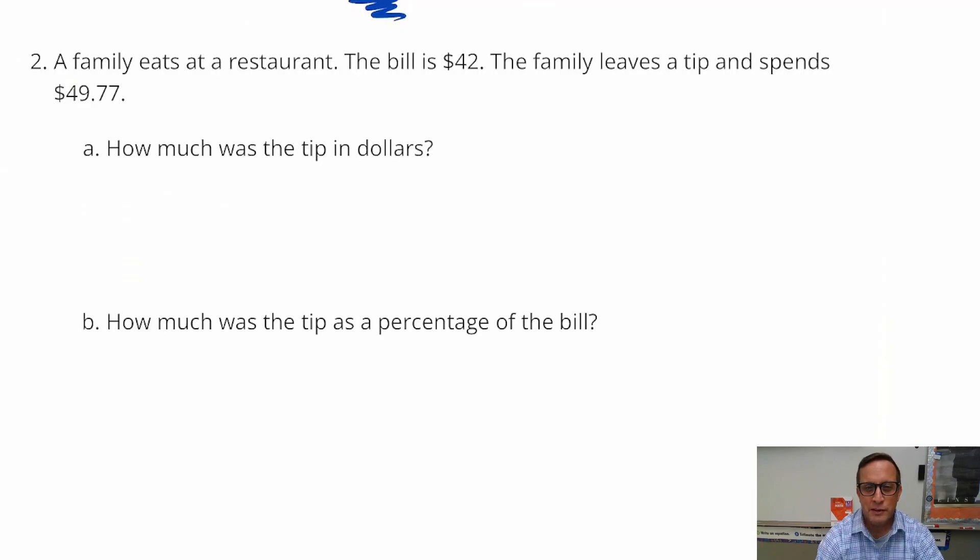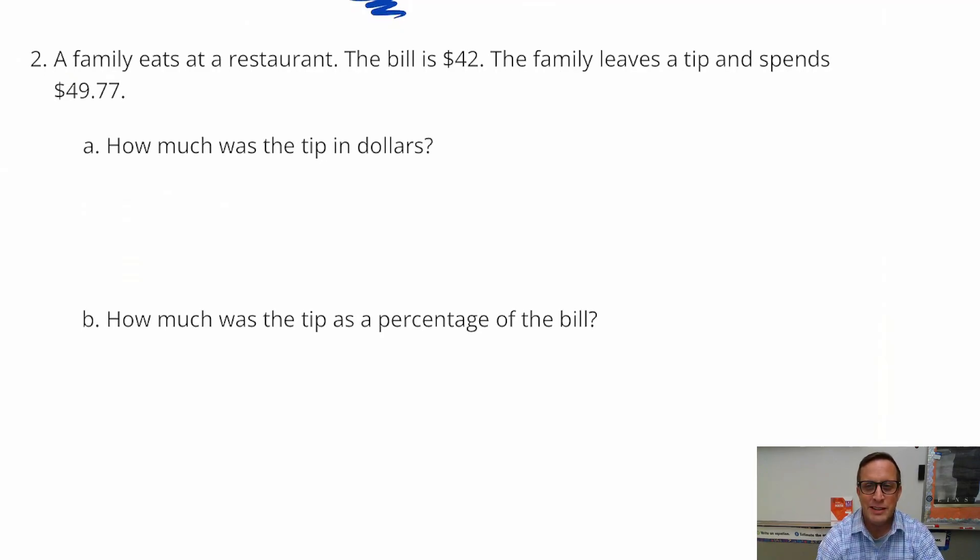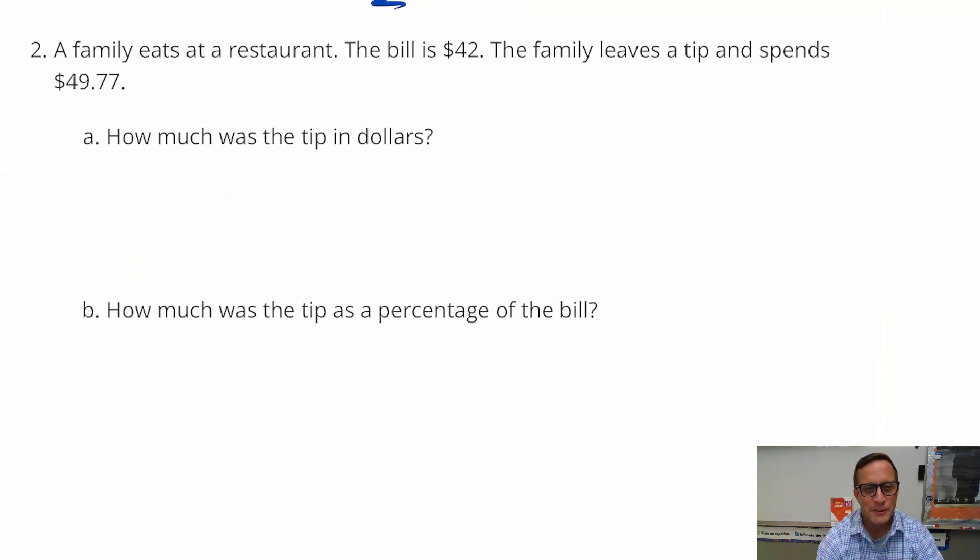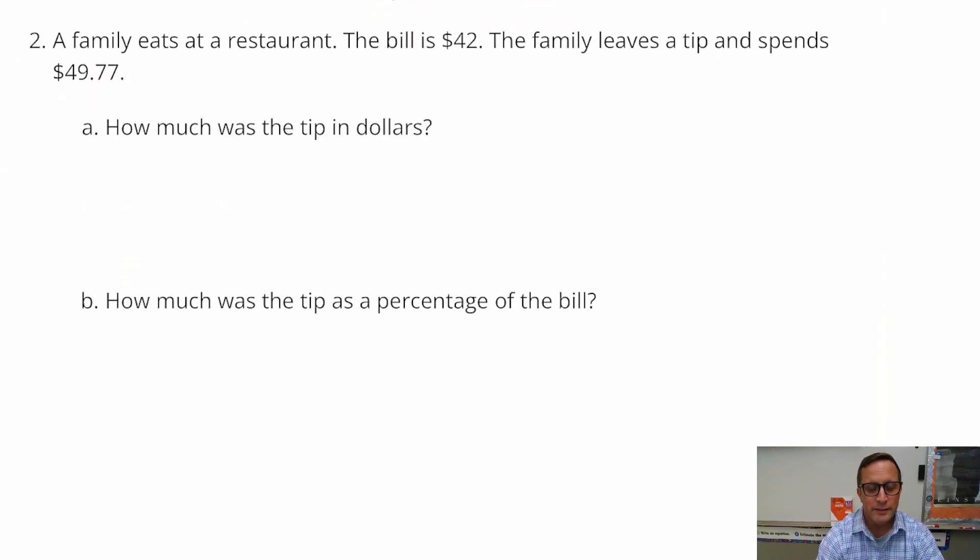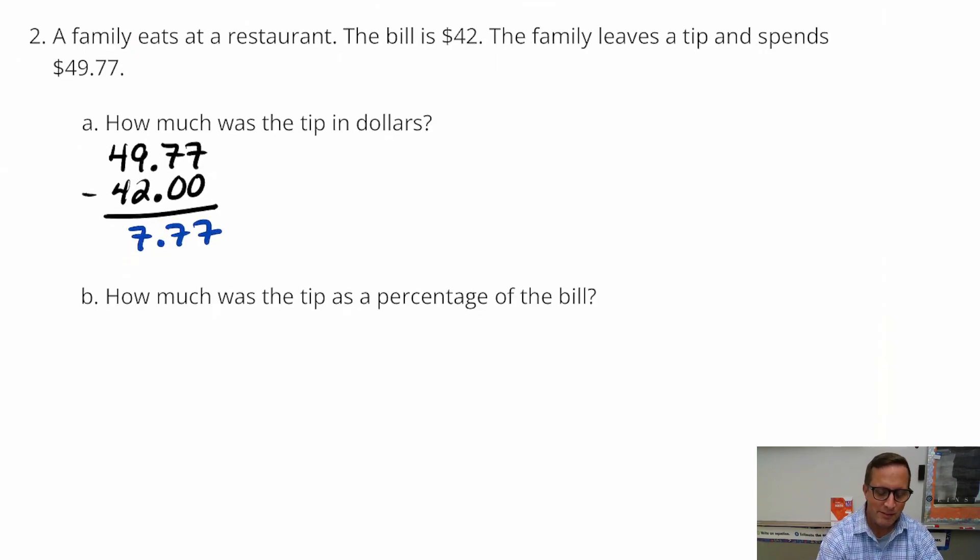Number two, a family eats at a restaurant. The bill is $42. The family leaves a tip and spends $49.77. How much was the tip in dollars? All right, now this is one of those problems where it's not directly given to you. You need to figure out what the tip is. So to figure out what the tip is, just find the difference of the total with tip, and take that away from the subtotal. That's the number without tip. And I'm betting that's the number without tax as well. But just subtract that, and you're going to get $7.77. So that's how much the tip was, $7.77.